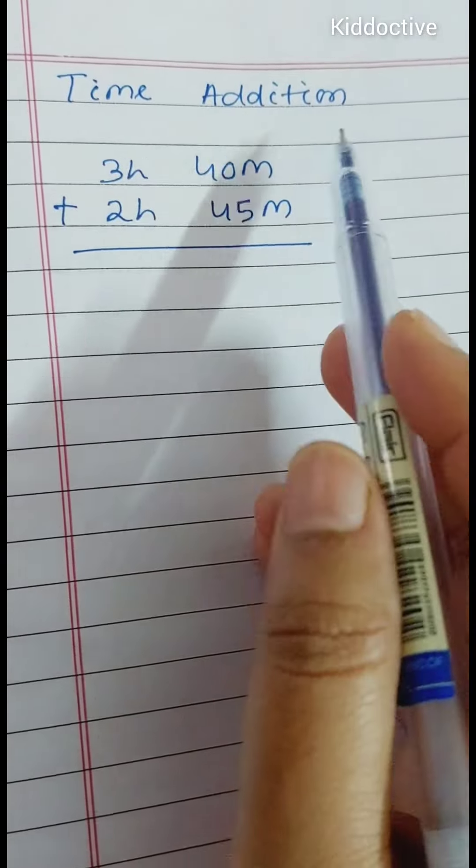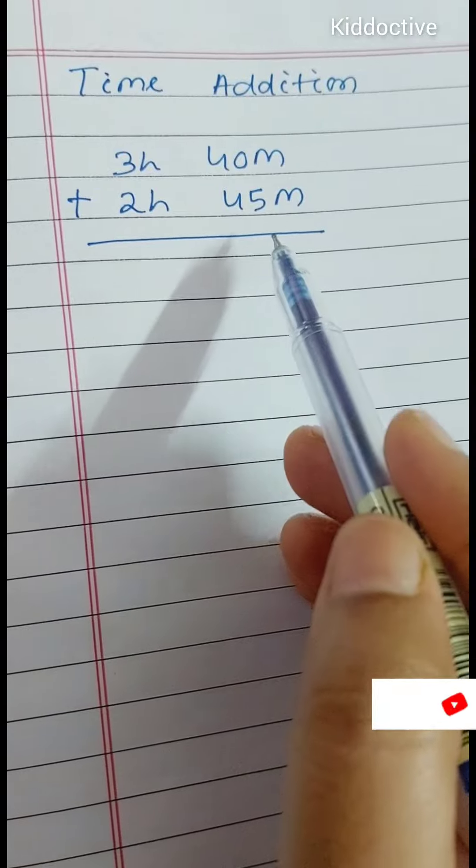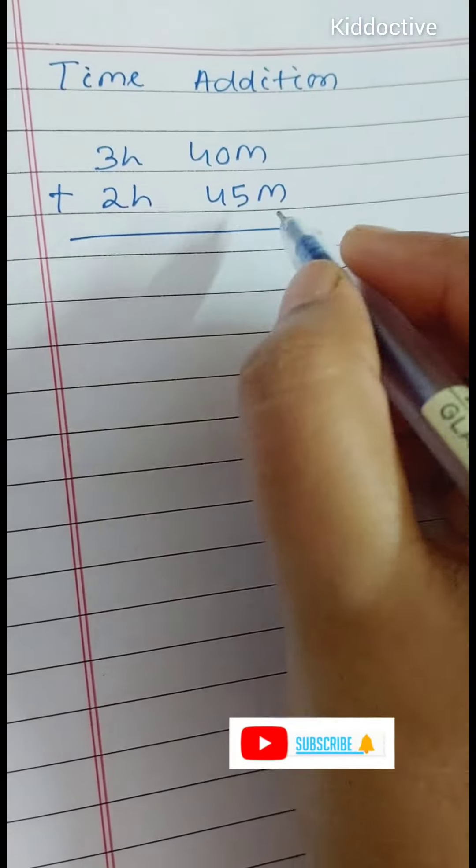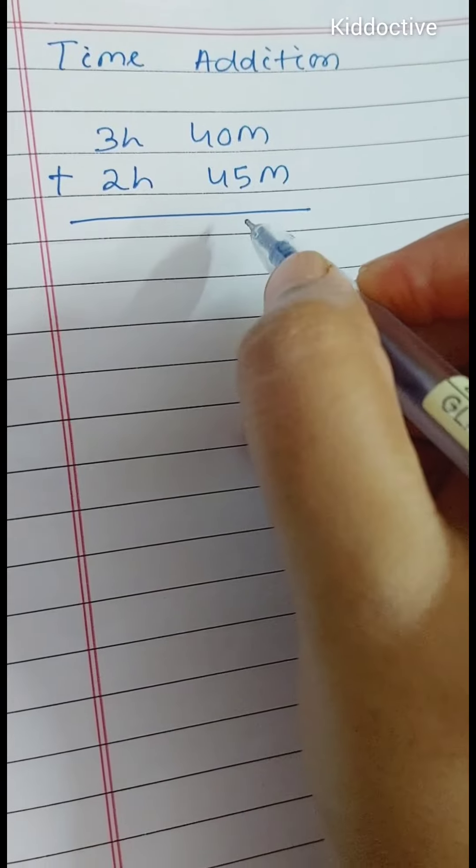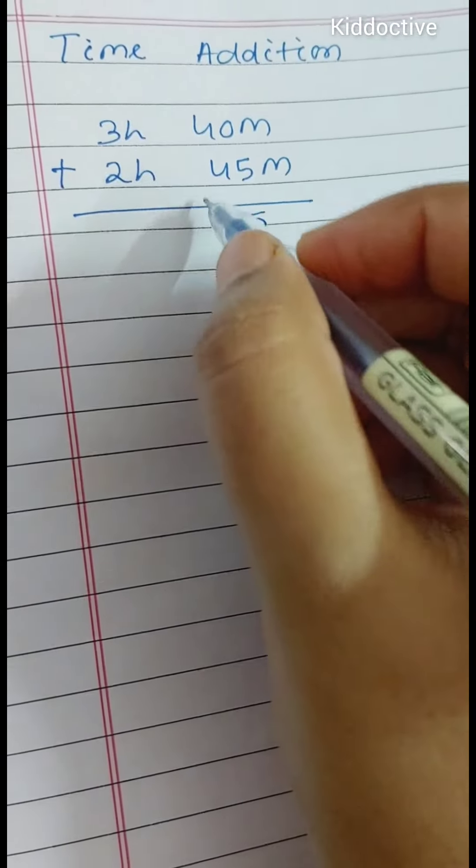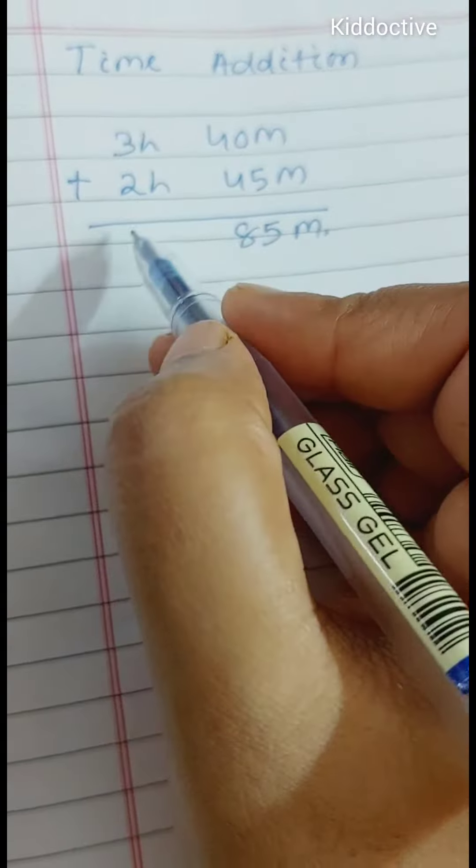Today we will do time addition. 3 hours 40 minutes plus 2 hours 45 minutes. You know addition, so you can do like 40 plus 45 is 85 minutes. 3 plus 2 is 5, so 5 hours 85 minutes in total.